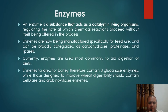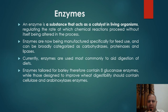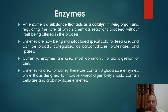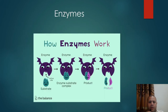An enzyme is a substance that acts as a catalyst in living organisms, regulating the rate at which chemical reactions proceed without itself being altered in the process. Enzymes are now being manufactured specifically for feed use and can be broadly categorized as carbohydrases, proteinases, and lipases. Enzymes tailored for barley contain beta-glucanase, while those designed to improve wheat digestibility contain cellulase and arabinoxylanase enzymes. A figure shows how enzymes work via the enzyme-substrate complex, and enzymes are very specific to their substrate.